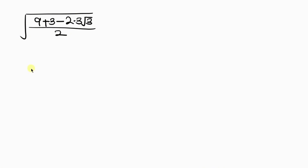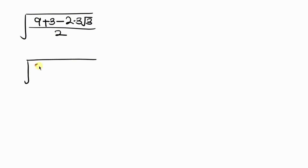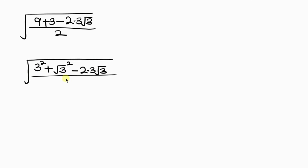Now simplifying: the square root of 9 is a perfect square, which means it can be written as 3 squared. Plus 3 can be written as the square root of 3, squared, because this square can cancel out the square root leaving behind 3. So this expression and this 3 are the same thing, minus 2 times 3, minus 2 times 3 root 3, all over the denominator 2.